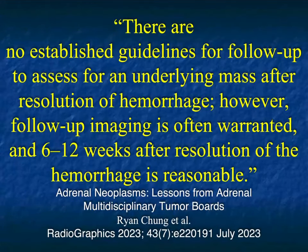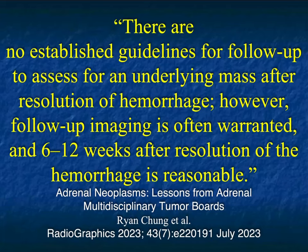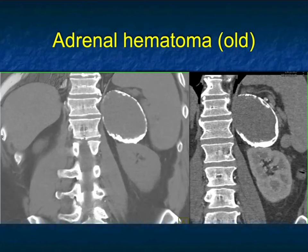If you have a bleed, there are no firm guidelines for determining when to follow the patient. This article suggests waiting six to twelve weeks — if you don't wait long enough, you won't be able to find a mass. We usually wait about six weeks, then get a repeat CT scan to look for any changes in size and for underlying occult tumors.